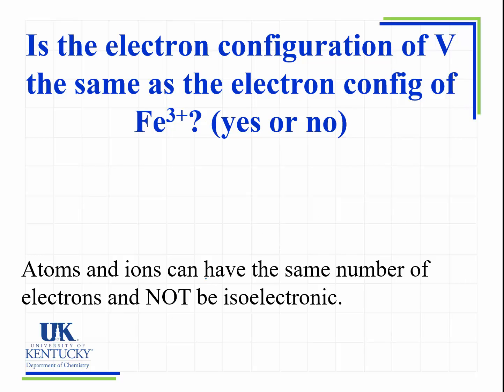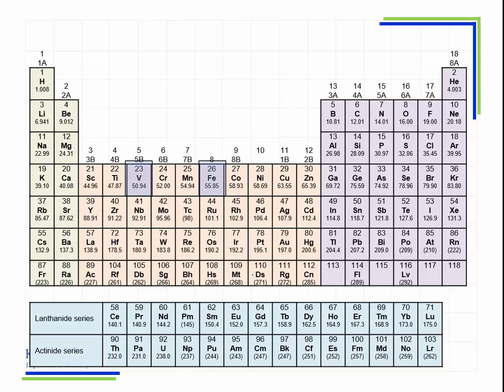So they can, in some cases, have the same number of electrons and not be isoelectronic. Let's examine these two. Let's do the electron configuration of just vanadium first. The noble gas that comes before vanadium is argon. And then we come across, and we have 4s2 and 3d3.